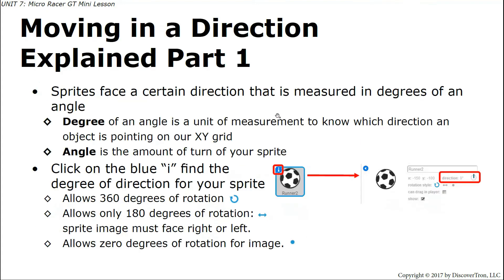So first things first, the motion and the movement of sprites. Your sprites all face a direction even if it's a circular shape like this soccer ball. It has a direction that it faces and it's measured by degrees. By definition, a degree of an angle is a unit of measurement to know which direction an object is pointing in our XY grid, and the angle is the amount of turn for your sprite.